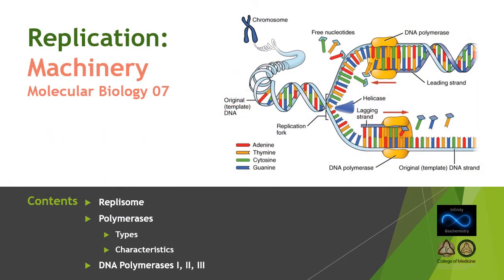Welcome to this lecture in the series of molecular biology. In this lecture, I will be discussing the machinery of replication — the replisome — and the different types of polymerases in prokaryotes, taking E. coli as an example. I will discuss their characteristics, focusing mainly on DNA Polymerase III.